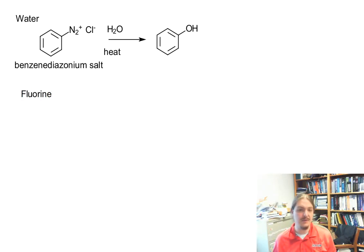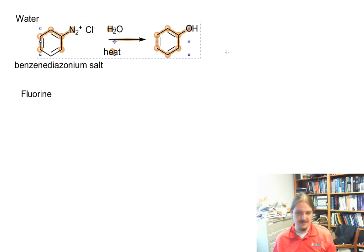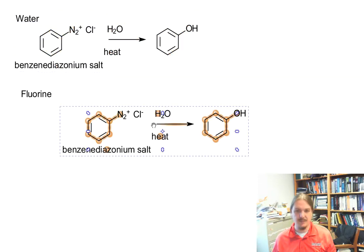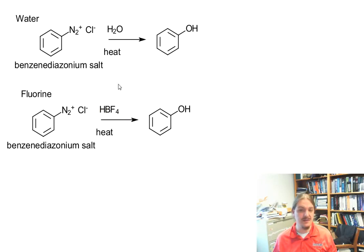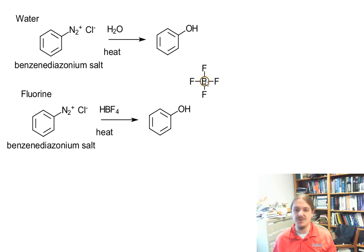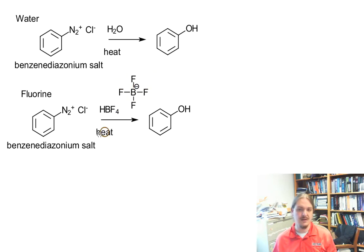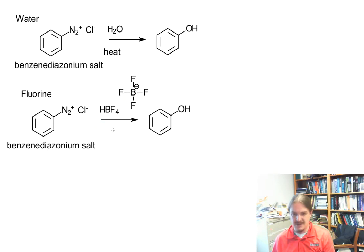If you want to add a fluorine nucleophile, you need a nucleophilic source of fluorine that's not HF, which is terrifying. The typical source of nucleophilic fluorine is the BF4⁻ anion — tetrafluoroborate. This is a source of nucleophilic fluorine, much like BH4⁻ is a source of nucleophilic hydrides. This reaction doesn't really need to be heated. There are other nucleophilic fluorine sources, but this is a common one.